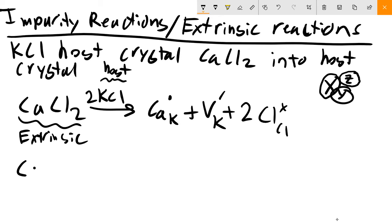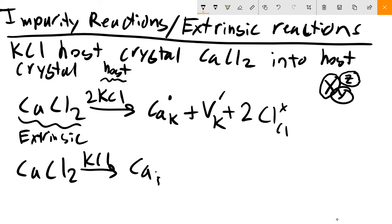Let's write another extrinsic reaction. Instead of substituting the K site, let's say calcium occupies an interstitial site. The interstitial site is initially empty, so the charge is zero. We place a calcium cation there - charge is two-plus. Two-plus minus zero gives two dots. We need another defect reaction creating a net negative charge, so we use two cation vacancies to charge-compensate: two negative one primes gives negative two total. Net charge is now neutral.